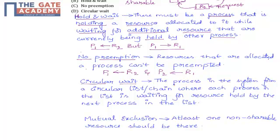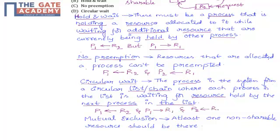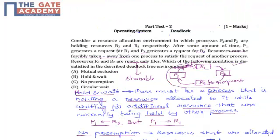Next one: Circular Wait. The term circular wait itself means that the processes in the system form a circular list or chain where each process is waiting for the resource held by the next process in the list. From this diagram, P1 is holding R2 and requesting R1, and P2 is holding R1 and requesting R2. This diagram shows a clear picture of circular wait.